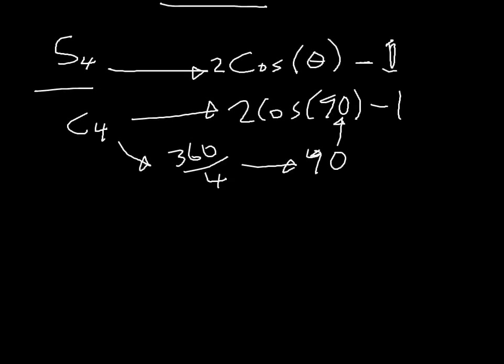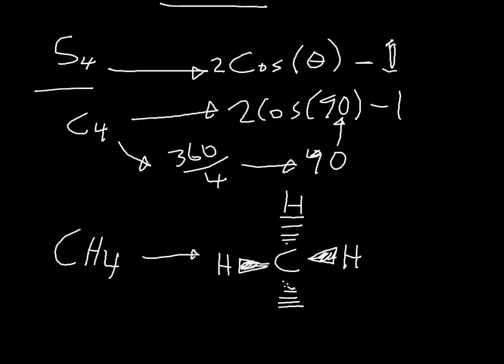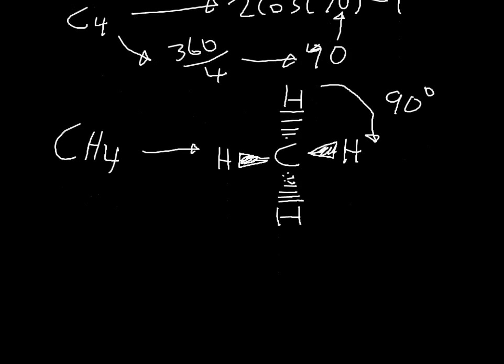If you want to go through and do a little example of this, here's methane. And if we drew it like this, this is a very weird way to draw but this is the best way to show S. We're kind of looking straight down the C2 axis here. So what you do is you rotate this by 90 degrees.